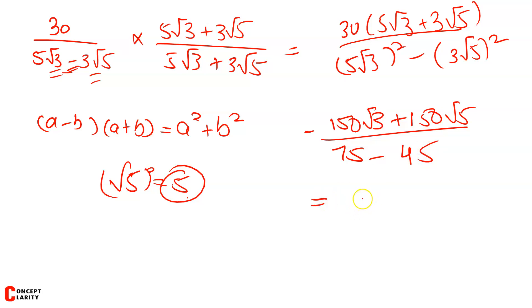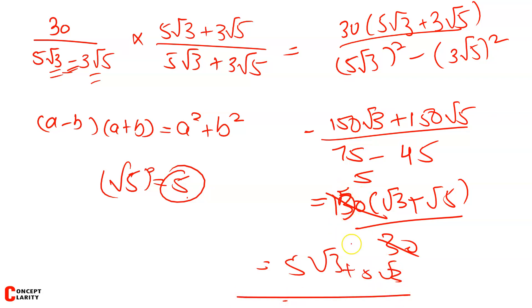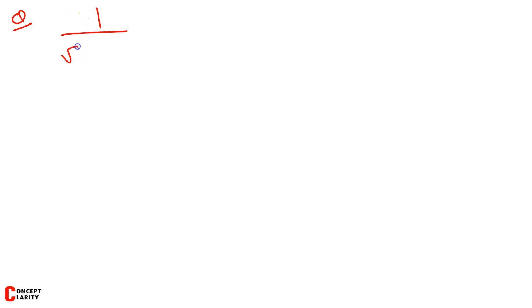So applying the formula: denominator becomes (5√3)² − (3√5)² = 25 × 3 − 9 × 5 = 75 − 45 = 30. Taking 30 common from numerator, it cancels with 30 in denominator. Taking √50 common from the numerator terms: 5√3 + 5√5 — wait, simplifying: the final answer gives 5√3 + 3√5 upon 30. This is how these questions should be done. The answer is reached by canceling the common factor.